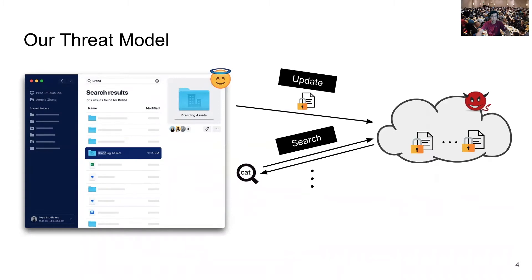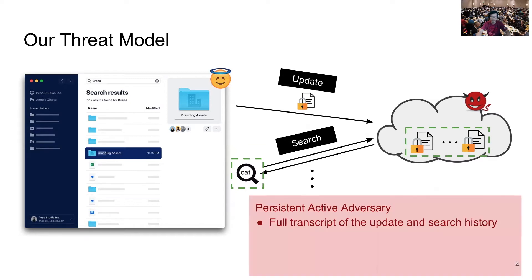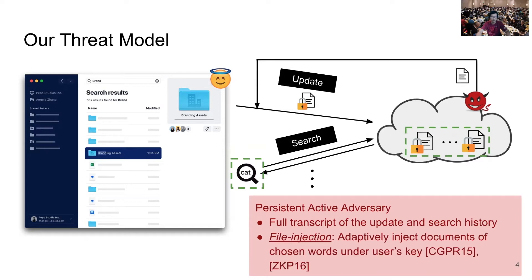This is our threat model. We focus on the confidentiality of the query keyword and the documents. We want to protect them against a persistent active adversary who has a full transcript of the update and search history. We further assume the adversary has file injection capability, which allows them to adaptively inject documents of chosen keywords under the user's secret key. This is a practical capability that has been explored in previous work.